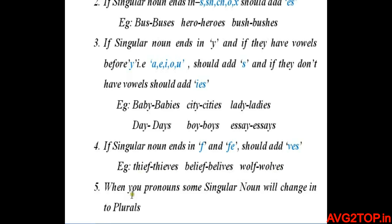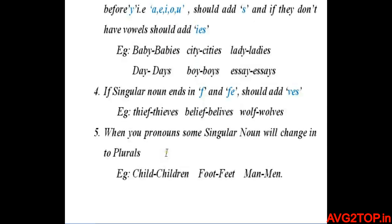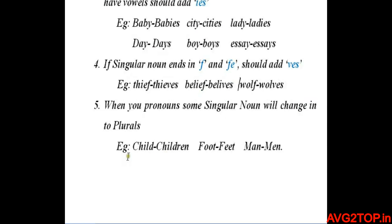The fifth condition: when you pronounce some singular nouns, the form completely changes in the plural. For example, child becomes children, foot becomes feet, and man becomes men.